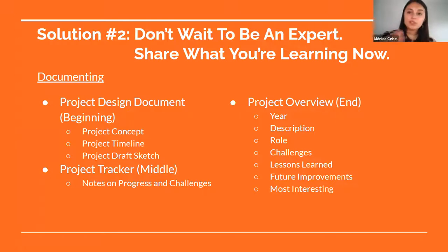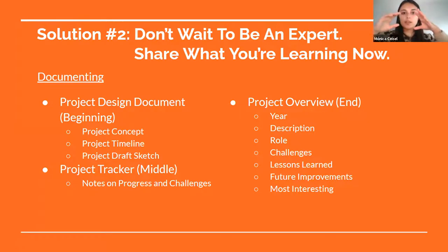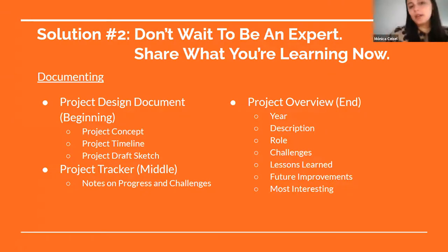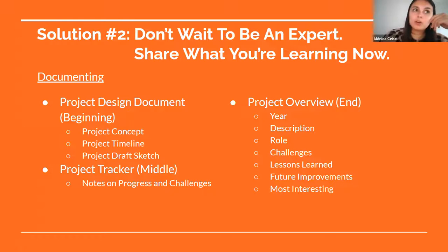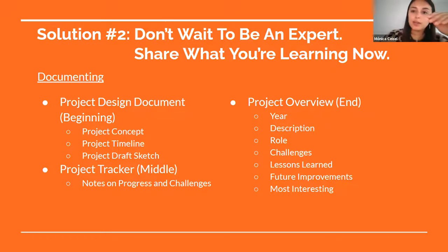Here's a documentation structure I followed for my Unity project. At the beginning: write down the project concept, timeline, and a draft or sketch — for a website that's a wireframe; for a game, sketches of characters or art style. This is your design document. Throughout the project, maintain a project tracker with notes on progress and challenges — if you got stuck on a function, add it to your to-do list. This also helps you look back at your timeline to see how much time you originally allocated versus how long things actually took.